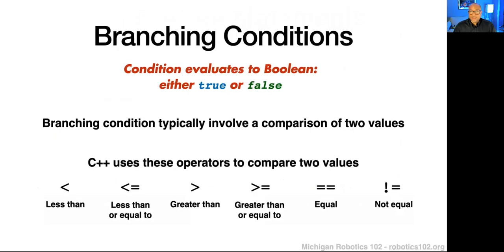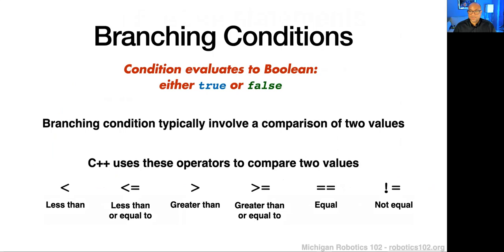We should note that these branching conditions evaluate to either true or false. The condition typically involves a comparison of two values. C++ has a number of operators to compare two values, which largely come from arithmetic: less than, less than or equal to, greater than, greater than or equal to, equal, and not equal.